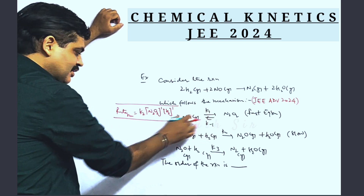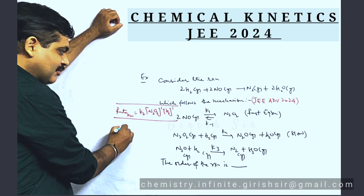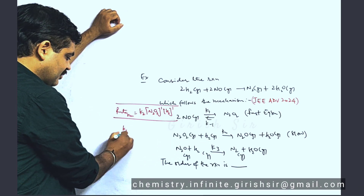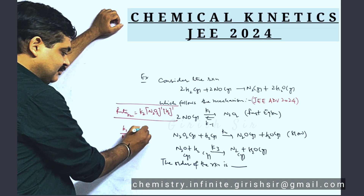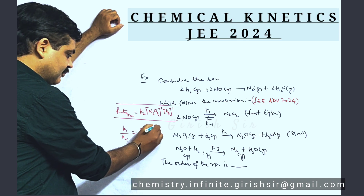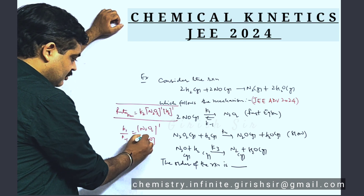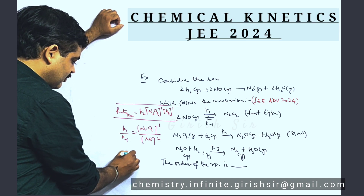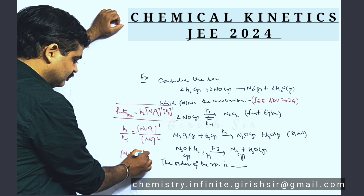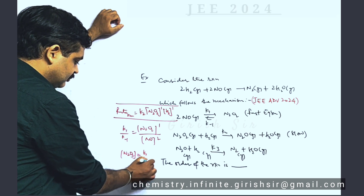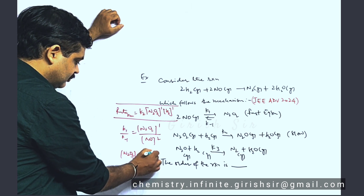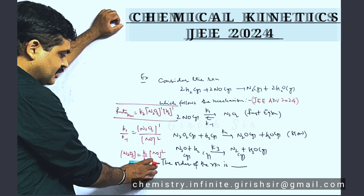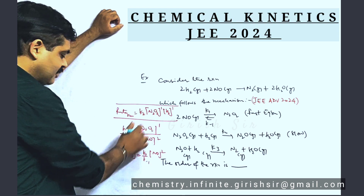For this fast equilibrium, we write the equilibrium constant, which is the ratio of the forward and backward rate constants. From here, we find the concentration of N2O2, and substitute this expression into the rate law.